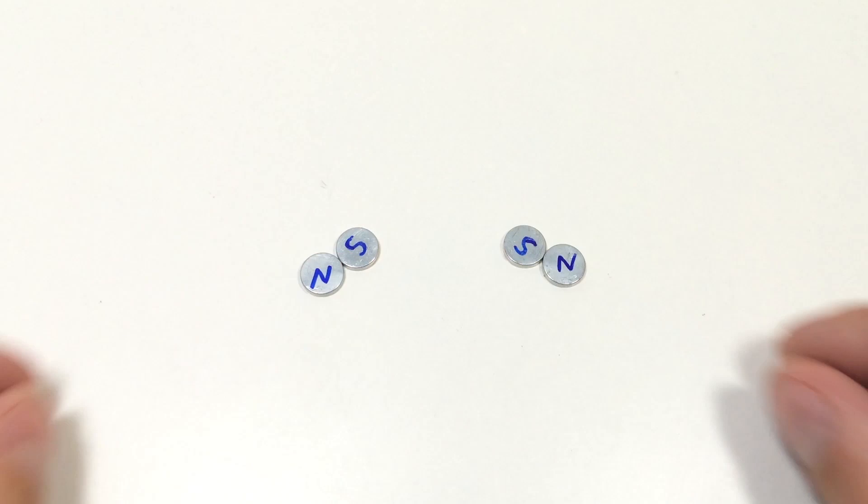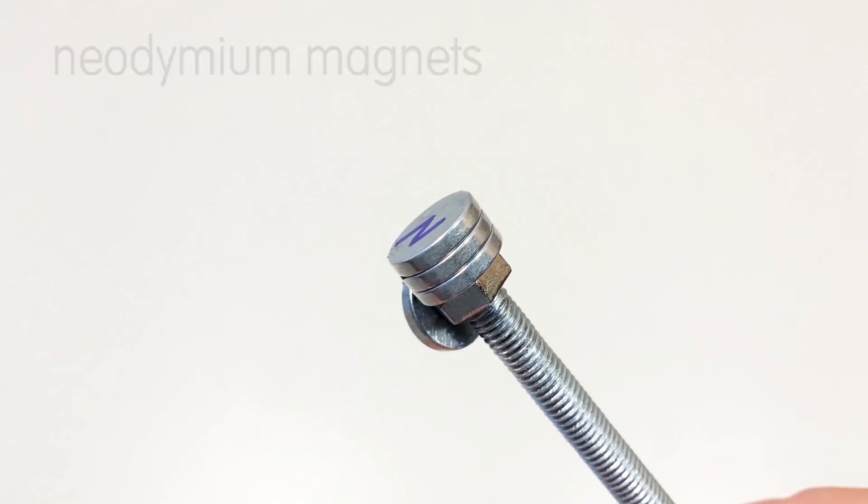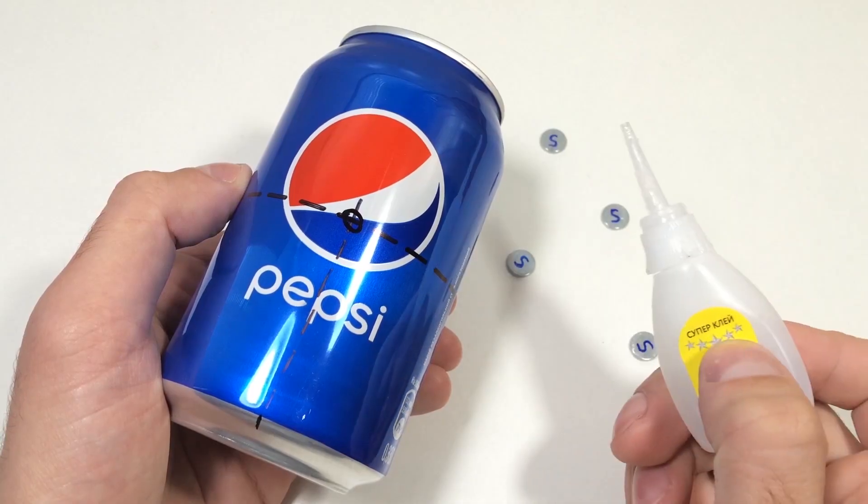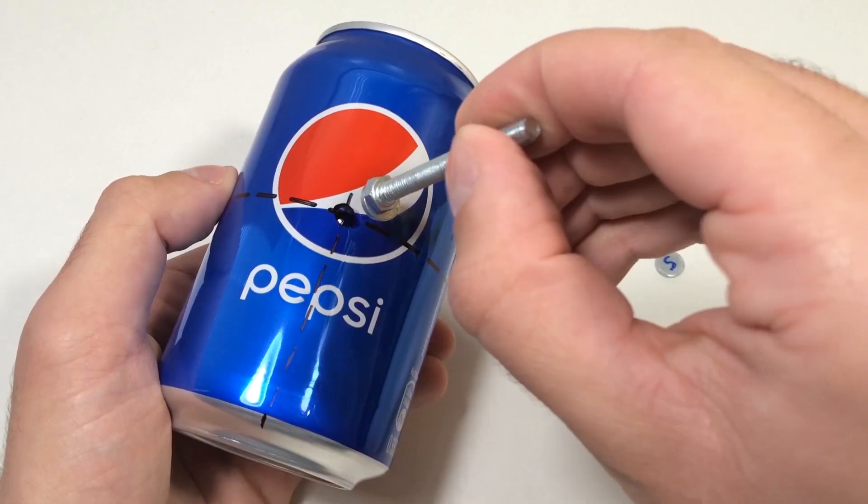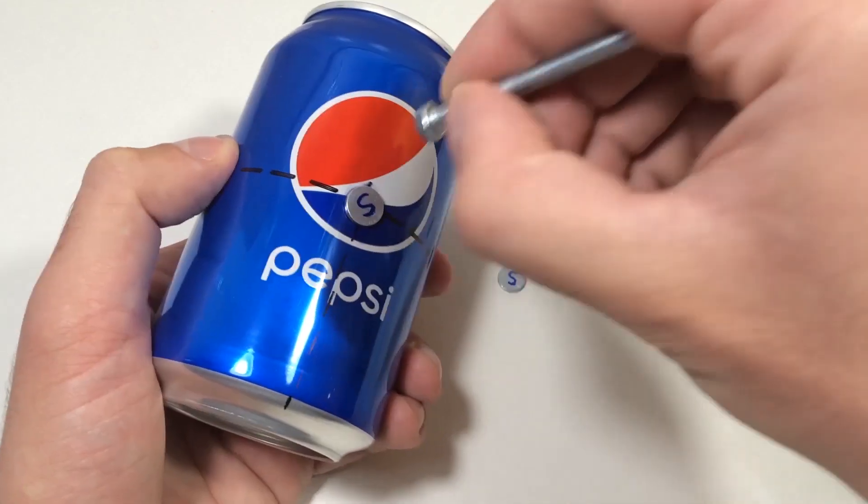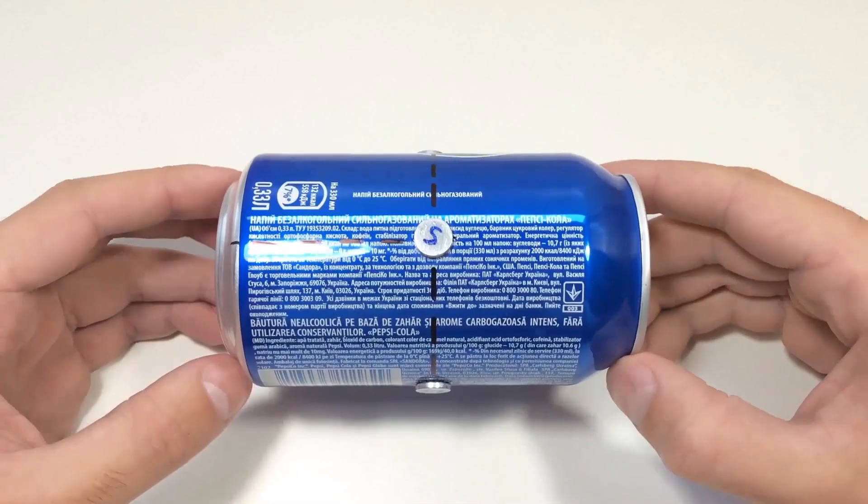At the center of each section, attach a strong neodymium magnet. Make sure all four magnets face outward with the same pole. This alignment is important for the motor to run.